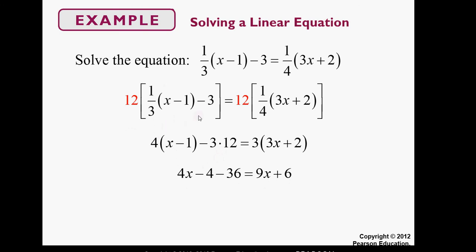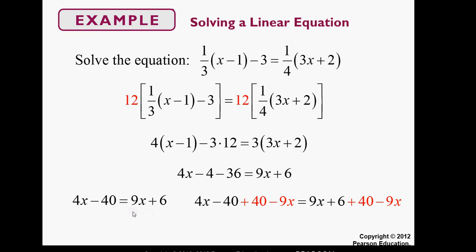We distribute the 3 on the right-hand side and then get rid of like terms by combining the negative 4 and the negative 36 to get negative 40. Now we have a couple more steps: we need to get rid of x on one side, because if x appears on both sides we can't yet state what x is.